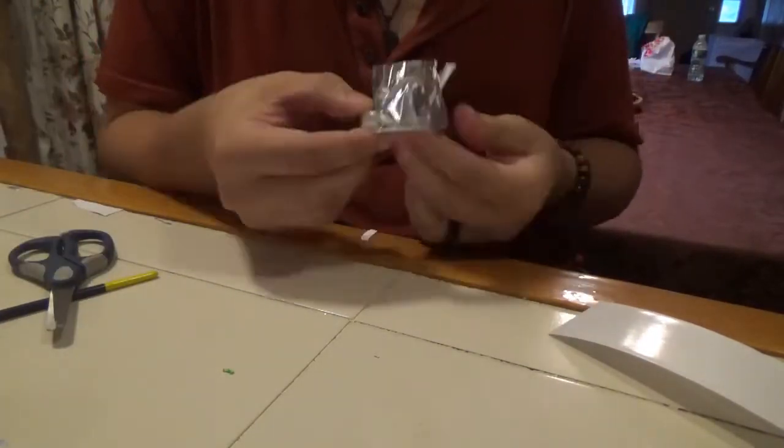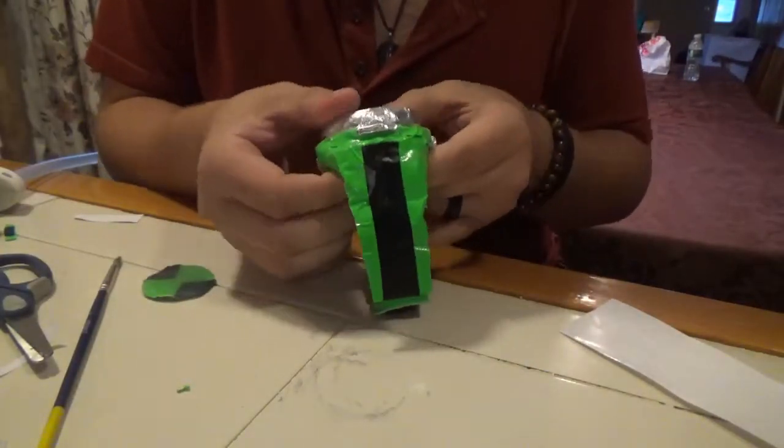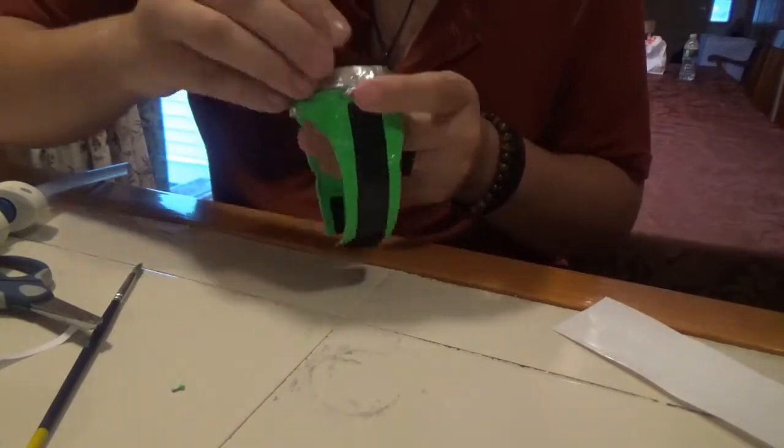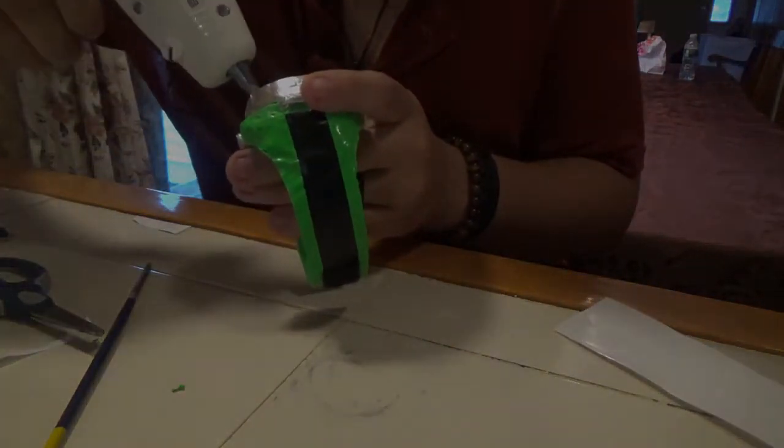Now that all the pieces are created, the final step is to glue the dial to the wristband, and the face to the dial. And now you have your very own Omnitrix.